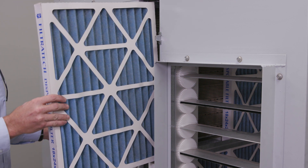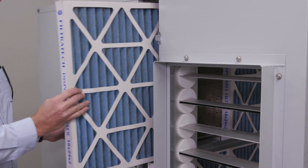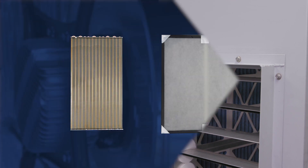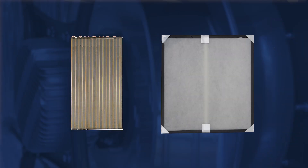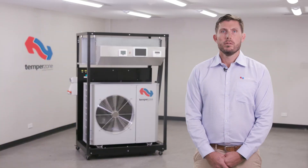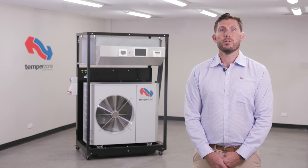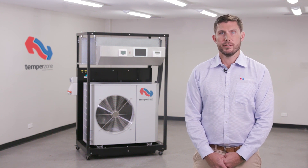The return air filter must equal the same surface area of the indoor coil face as a minimum. It is recommended to select return air filters that have a surface area larger than that of the return air coil. This can be achieved with corrugated filters or multiple grill filters.